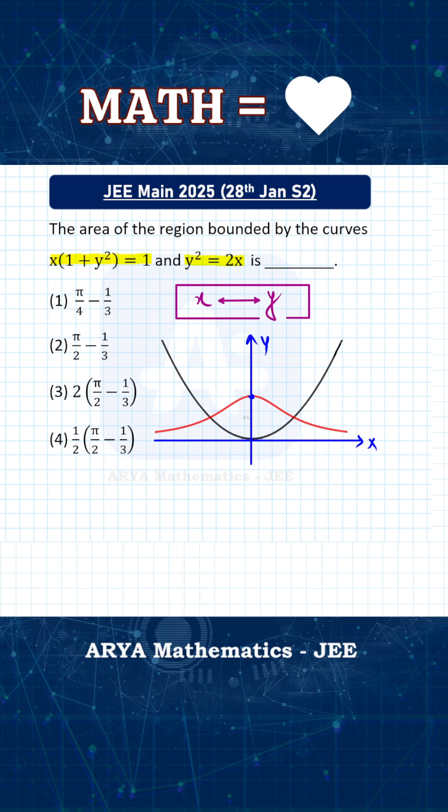However, one simple transformation can significantly reduce the time for solving this problem. If we interchange x and y, then the first equation will become y equals to 1 by 1 plus x square, and the second equation will be x square equals to 2y. The idea is that if we take image of any two curves in a line, then the area bounded between those two curves will not change, and interchanging x and y will mean that we are taking image of both of these curves in y equals to x line.